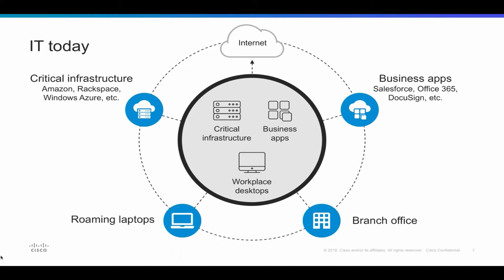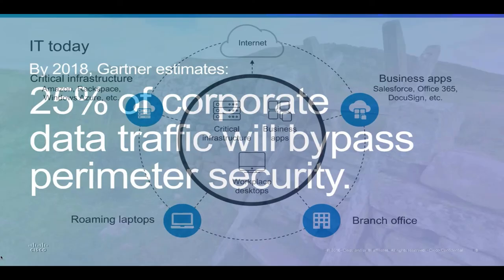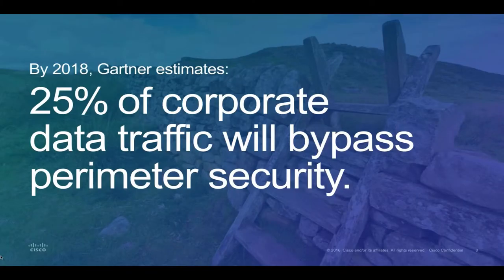We also see branch offices starting to connect more directly to the internet instead of backhauling. And what that's causing is — Gartner estimates that by 2018, 25% of corporate traffic will bypass perimeter security. So how do you still make sure that you provide protection everywhere?